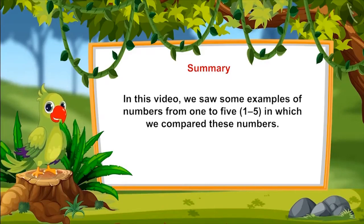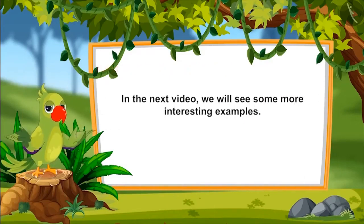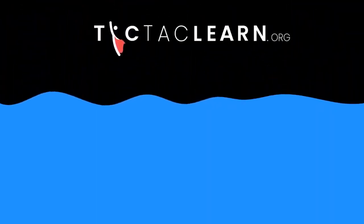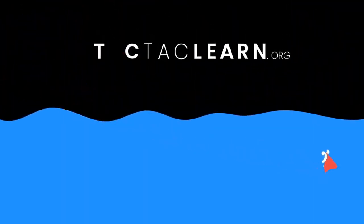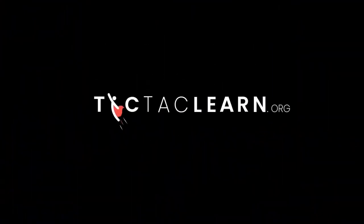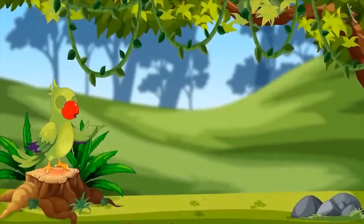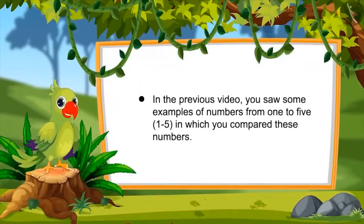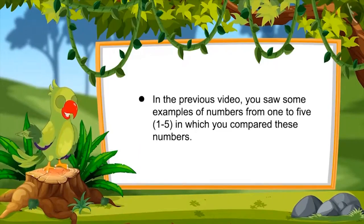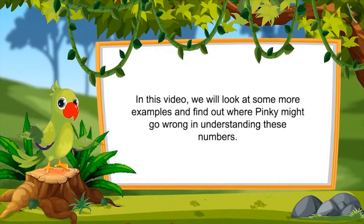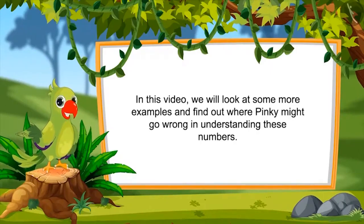In the next video, we will see some more interesting examples. Till then, goodbye friends. Interesting Example, Part 2. So children, in the previous video, you saw examples of numbers from 1 to 5 in which you compared these numbers. In this video, we will look at some more examples and find out where Pinkie might go wrong in understanding these numbers.